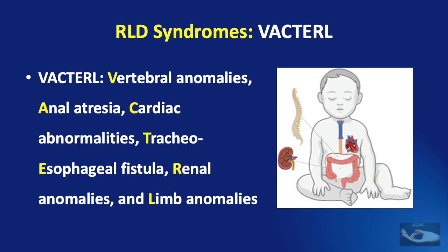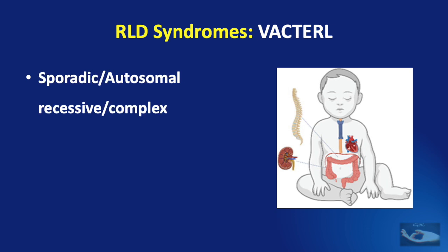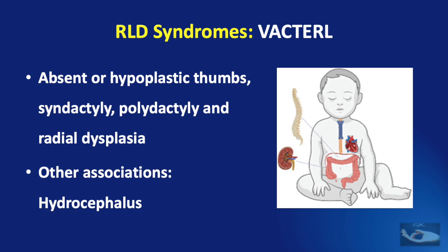The VACTERL syndrome refers to vertebral anomalies, anal atresia, cardiac abnormalities, tracheoesophageal fistula, renal anomalies, and limb anomalies. The inheritance is sporadic, autosomal recessive, or complex. Upper limb involvement is characterized by absent or hypoplastic thumbs, syndactyly, polydactyly, and radial dysplasia. It may sometimes also be associated with hydrocephalus.